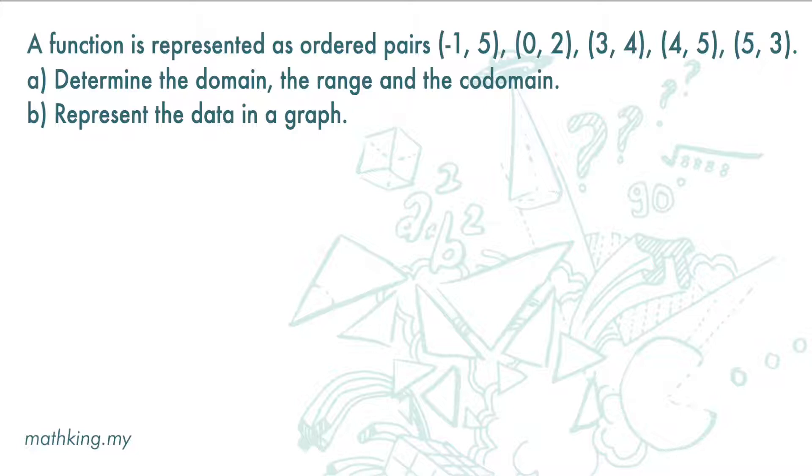B represents the data in a graph. Domain is all the data in front. So it is negative 1, 0, 3, 4, and 5.